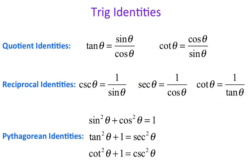And then these three are called the Pythagorean identities. It states that cosine squared plus sine squared equals 1, tangent squared plus 1 equals secant squared, and cotangent squared plus 1 equals cosecant squared.